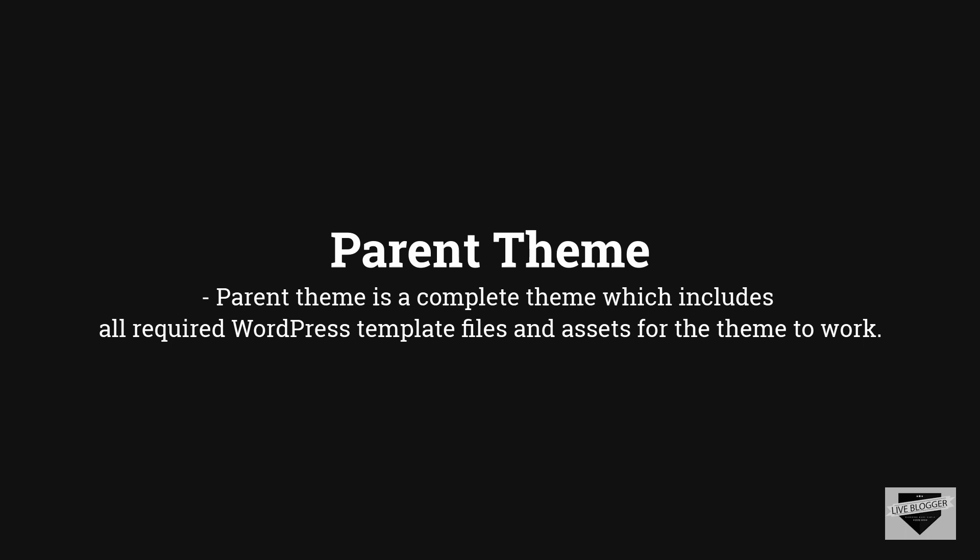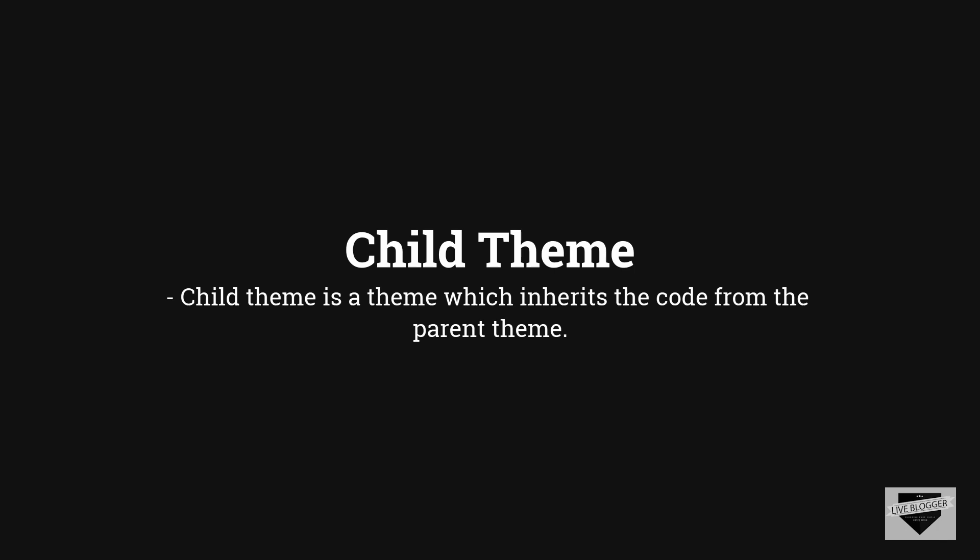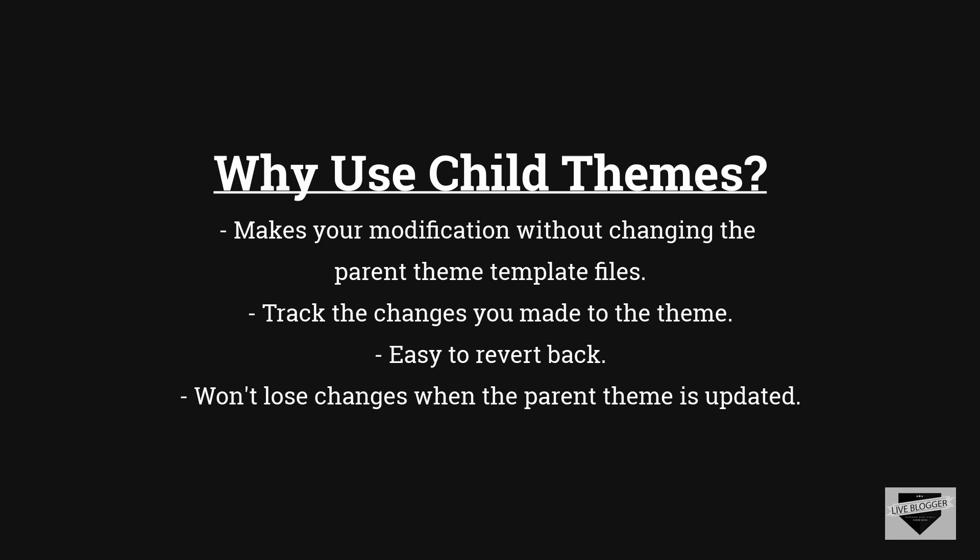A child theme, on the other hand, is a theme which inherits the look and feel of the parent theme. You can make changes to the child theme without actually editing the parent theme's template files. Child themes are usually used to make minor changes to the parent theme — for example, changing the color of all the headings. Now, you can also make changes directly in the parent theme, but if you update your theme, all the modifications will disappear, because the update process simply replaces old files with new ones. If you make changes to the child theme, however, you won't lose them when you update.